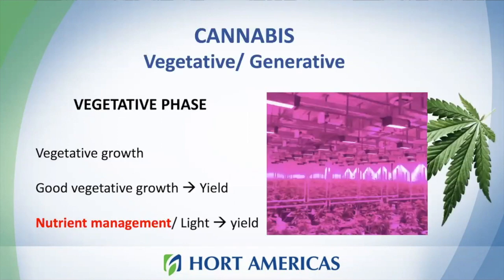In order to understand how to control the response of cannabis in an indoor system, we first need to learn about the vegetative phase and the generative phase. The vegetative phase is pretty important. Even though we don't have flowers at this stage, the vegetative phase will have a big impact in yield. At this stage we need to optimize light quality and quantity to promote growth.